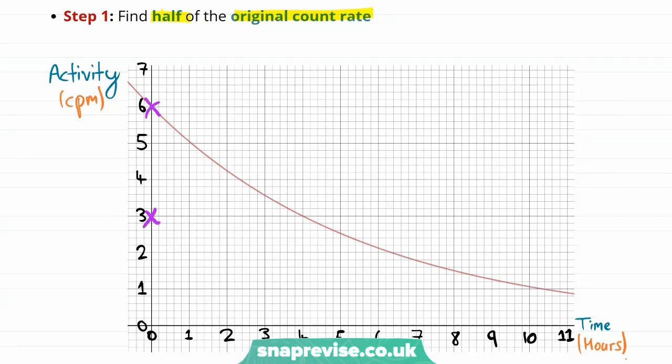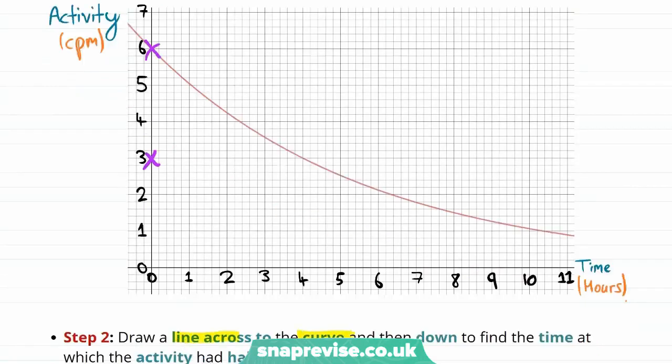And our next step is to draw a line across to the curve and then down to find the time at which the activity had halved. So we need to find the time when the activity went down to three because that was half. And we find that the answer is four. So the half-life is equal to four hours.